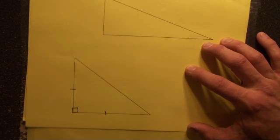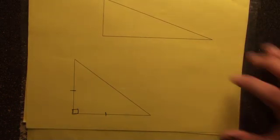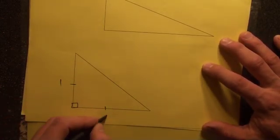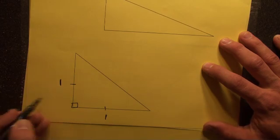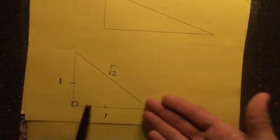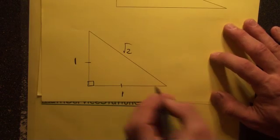It's half a square. So therefore, you know these are both 1s because they have to be congruent to each other. If you do the Pythagorean Theorem, you're going to get square root of 2. This is very, very easy.